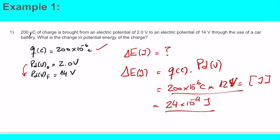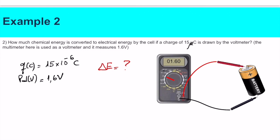Another example. Suppose we are measuring the electromotive force of a battery: 1.6 volts. How much chemical energy is converted to electrical energy by the cell if a charge of 15 microcoulombs is drawn by the voltmeter? This is what is happening in the battery - it's transforming chemical energy into electrical energy. The amount of energy is calculated using the same law, Joule's law.